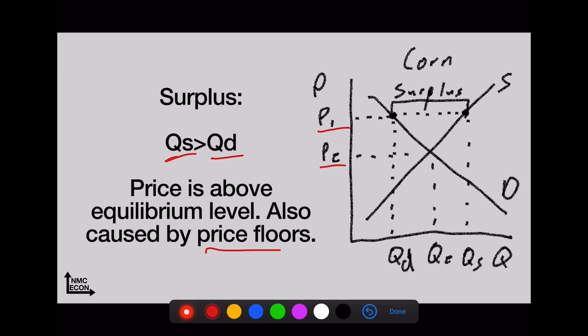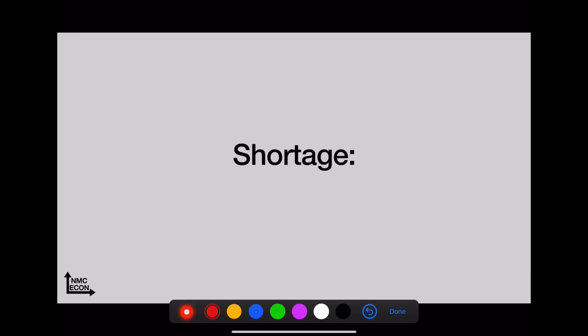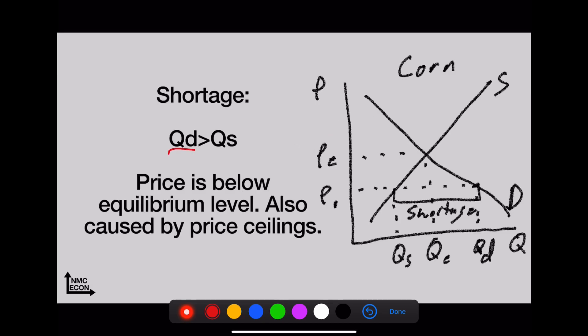Shortage—opposite. Qd bigger than Qs. Price is below equilibrium level. If this corn farmer charges a really low price, what's going to happen to them? Well, they're immediately going to sell out of their good and they're going to have a massive shortage, which basically tells them hey, I should increase the price. We'll move back up along these curves, both the demand curve and supply curve, until we get back to equilibrium.